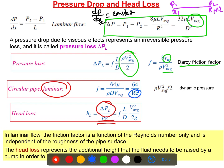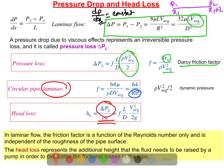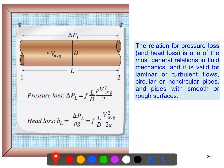The head loss is calculated as the pressure drop divided by ρg. This represents the additional height that the fluid needs to be raised by the pump to overcome those frictional effects. We'll discuss this further when solving problems. These are the final expressions for pressure loss and head loss.